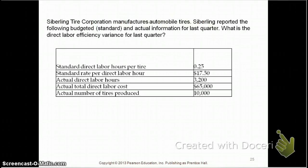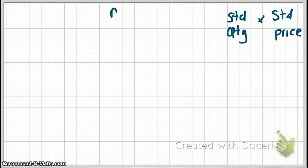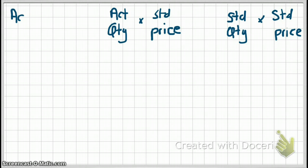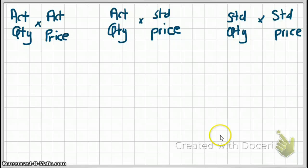Let's take a look at an example. Be sure to pause the video and read the question. We're going to use this question to calculate the direct labor efficiency variance as well as the direct labor rate variance. You set up this question the same way we did the direct material problems: standard quantity times standard price on the right-hand side, actual quantity times actual price on the left-hand side, and down the middle, actual quantity times standard price. This time, prices and quantities relate to direct labor, not direct materials.